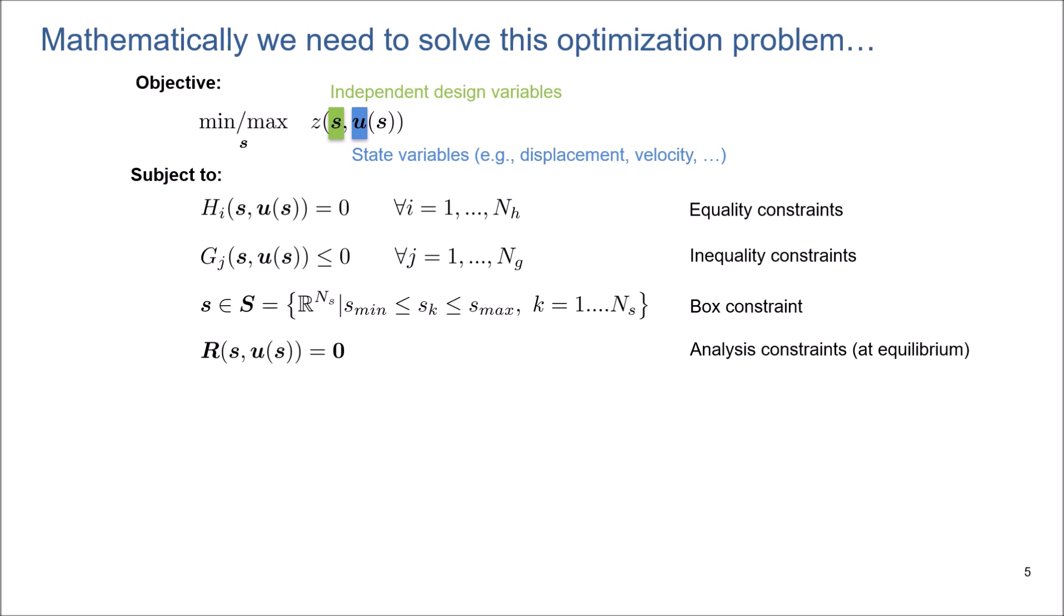Mathematically, we will minimize or maximize the objective function, which is a function of the design variables that I will cover in future videos, and design-dependent state variables like displacement, velocity, or pressure. We could have equality or inequality constraints for this topology optimization problem. In the context of topology optimization, we use the nested analysis and design NAND approach. Therefore, we will have analysis constraints and, of course, box constraints for design variables.